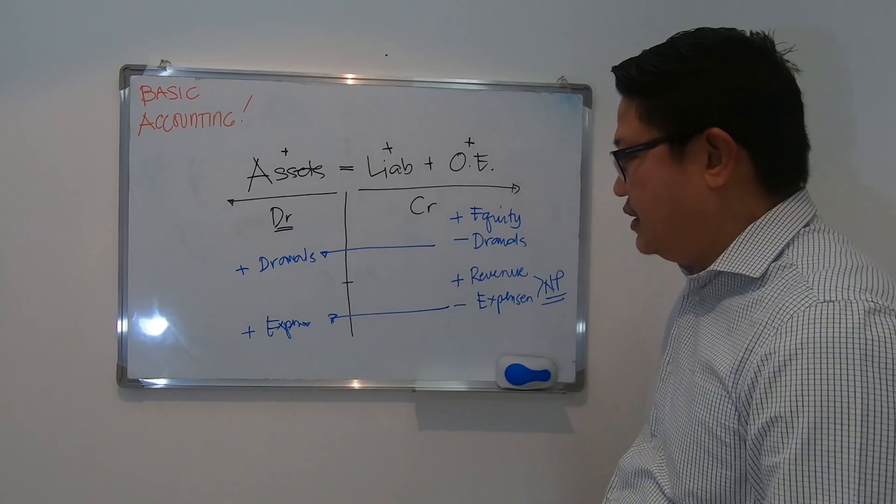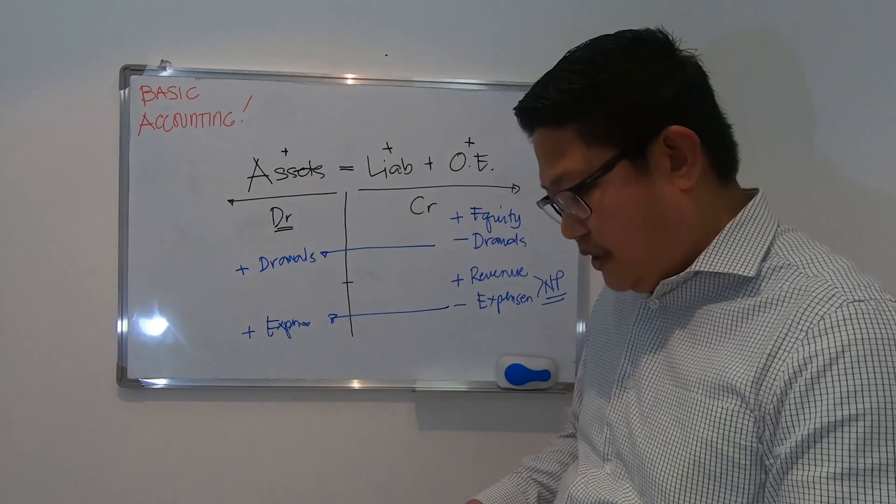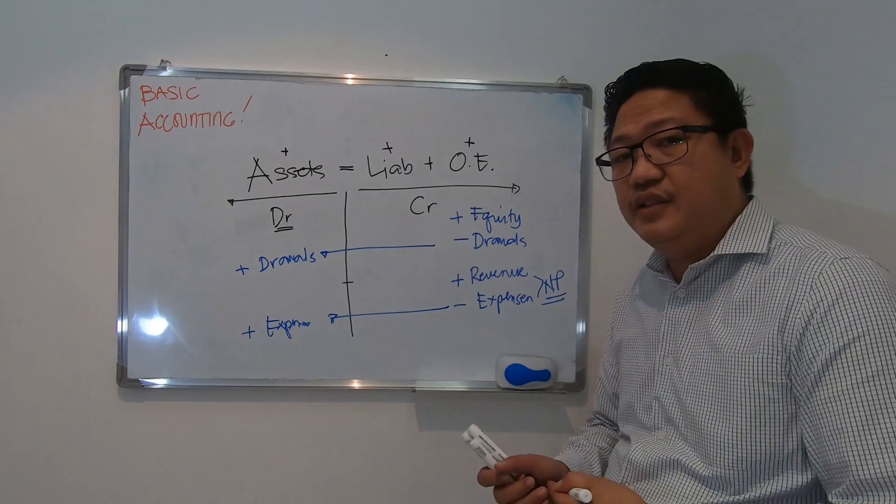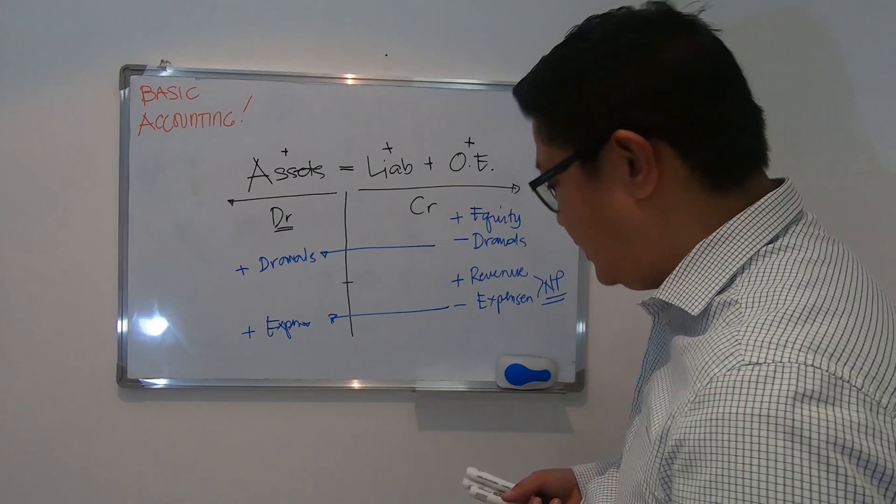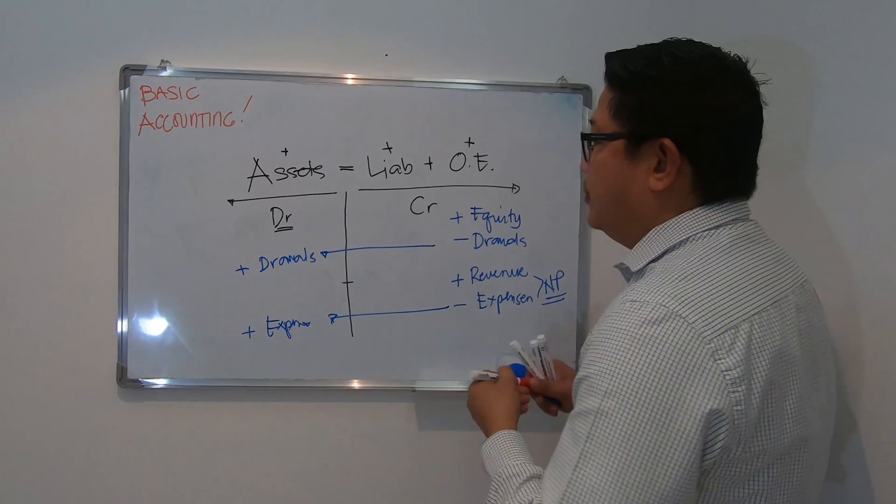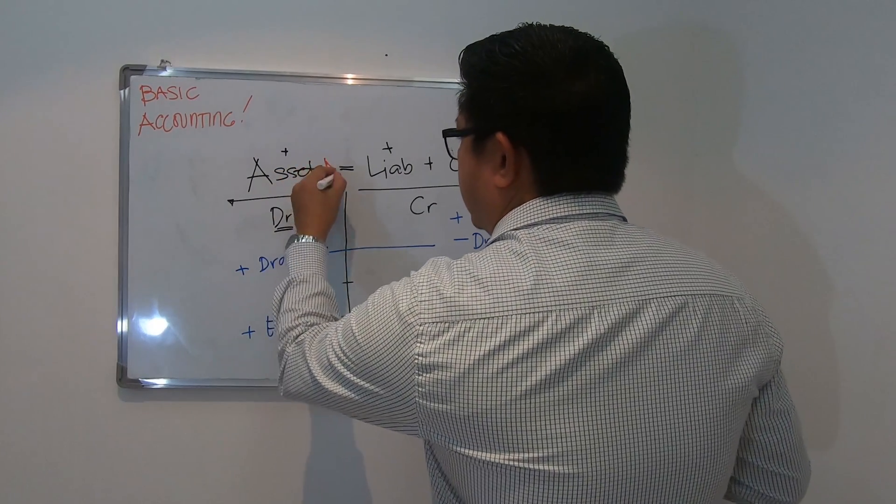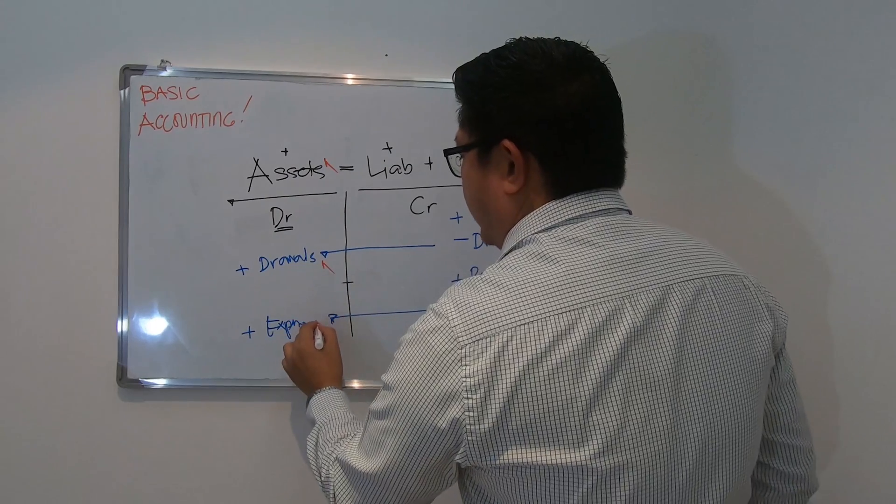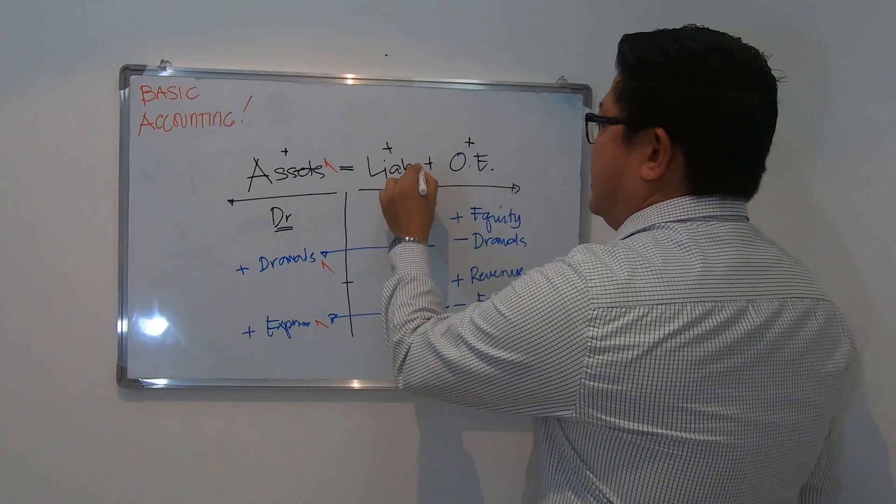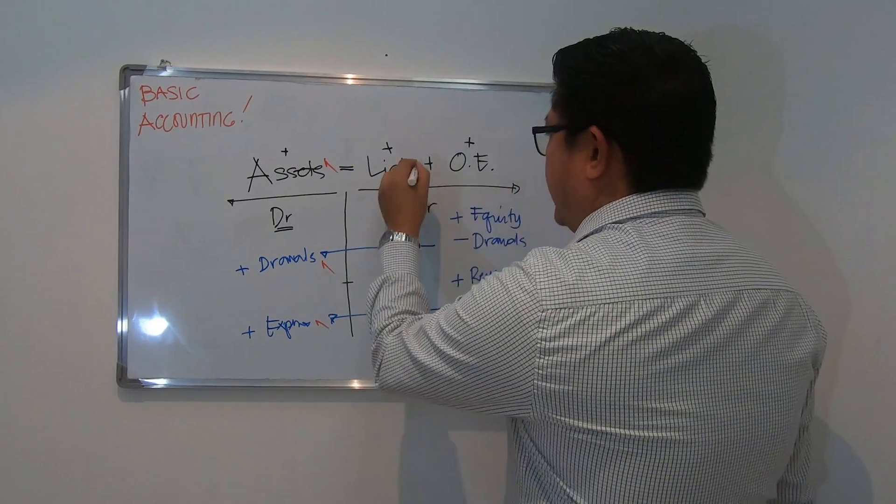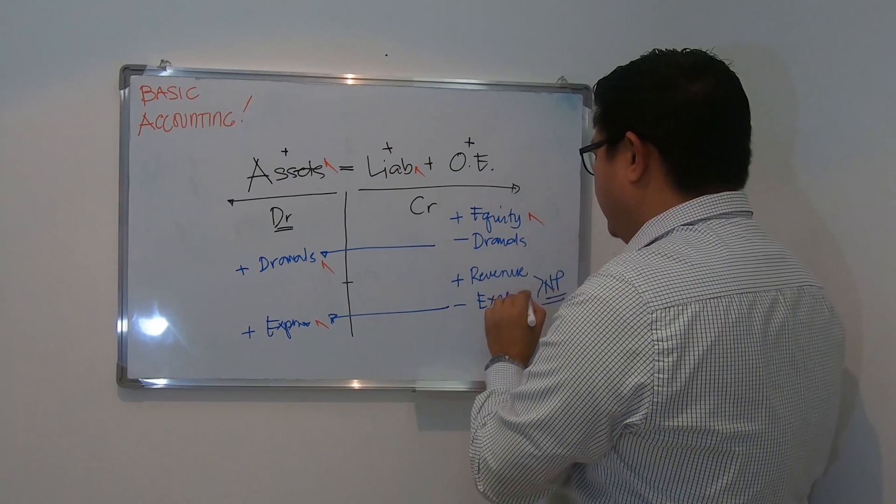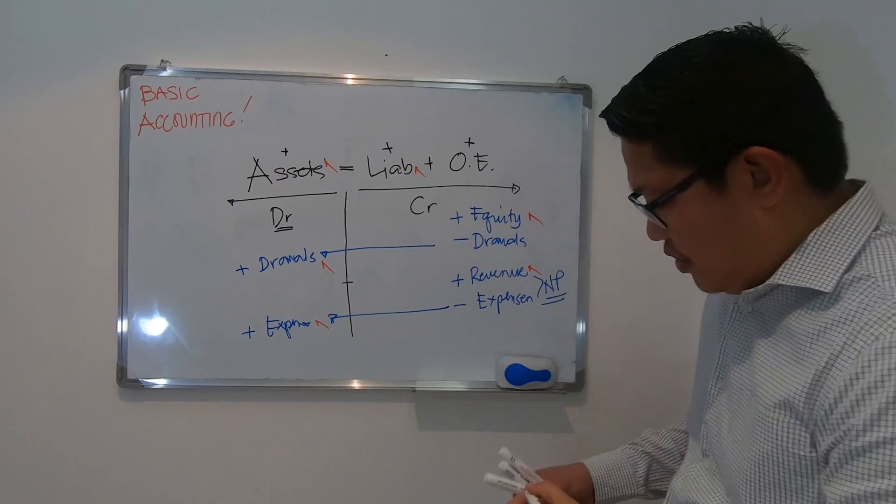So now we have on the debit side, we have assets, we have drawals, and we have expenses. And on the credit side, we have liabilities, we have equity, and we have revenue. So these are the normal balances all the time.